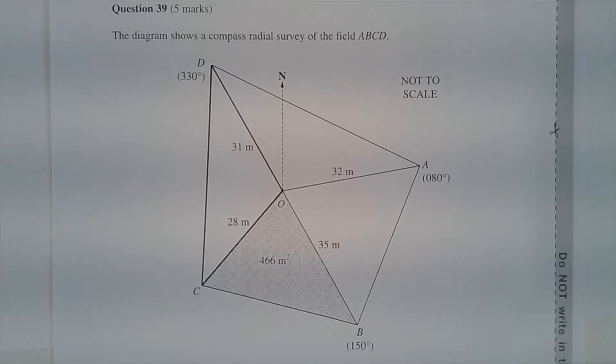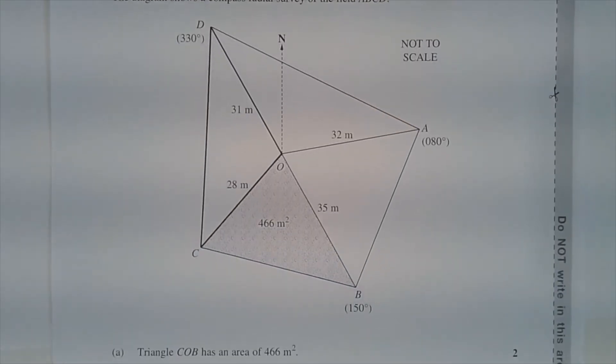Question 39. The diagram shows a compass radial survey of the field ABCD. Part A.